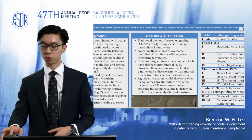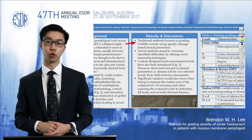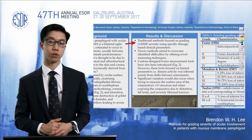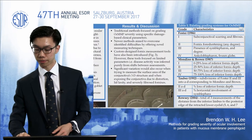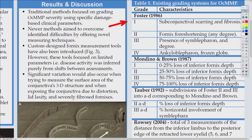The first thing we noticed was that there were very traditional scoring tools first created to measure ocular involvement. The first one was done by Foster in 1986, a four-grade system that looked at different signs in the eye — some of them listed there, including subconjunctival scarring, fornix foreshortening, and symblepharon, to name a few.